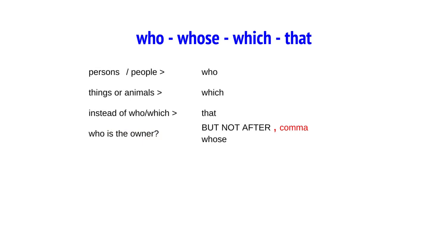In short: persons and people — who; things or animals — which; instead of who or which — that, but not after a comma. If you want to know who is the owner, then you say whose. Good luck with your exercises, and watch the video as many times as you like. Bye-bye!